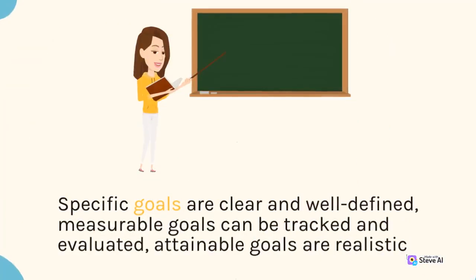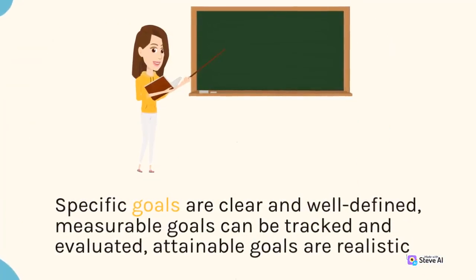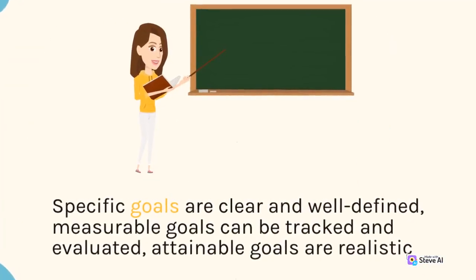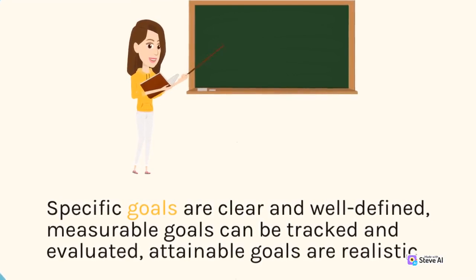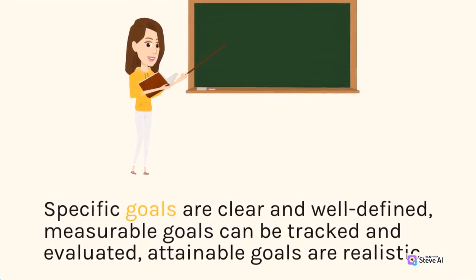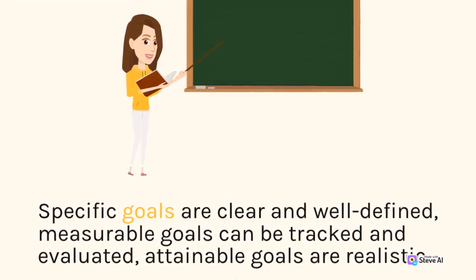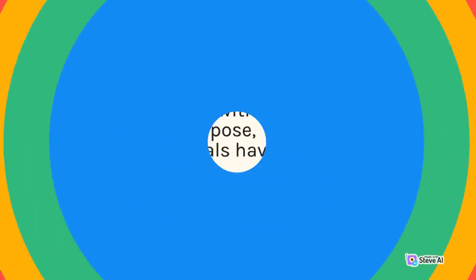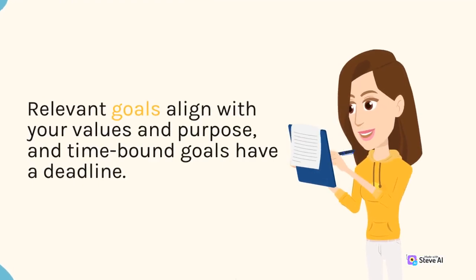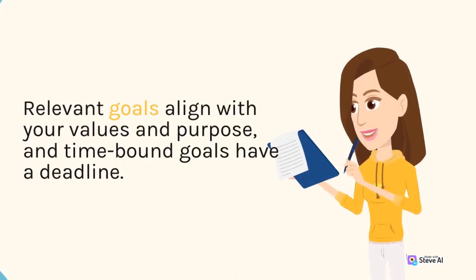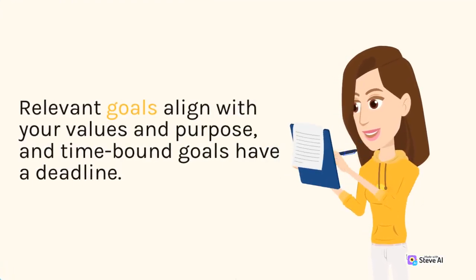Specific goals are clear and well-defined. Measurable goals can be tracked and evaluated. Attainable goals are realistic. Relevant goals align with your values and purpose, and time-bound goals have a deadline.